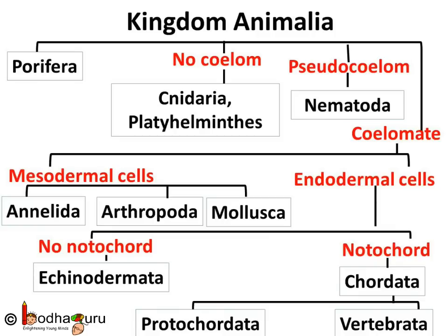After the presence of coelom and which type of coelom is present, we see if a notochord is present or not. If a notochord is present, then the animal belongs to the Chordata group. In some animals which belong to the Chordata group, the notochord is not present in all stages of life, so they are grouped in Protochordata. Whereas if a proper vertebral column is present, then the animals are grouped in Vertebrata.